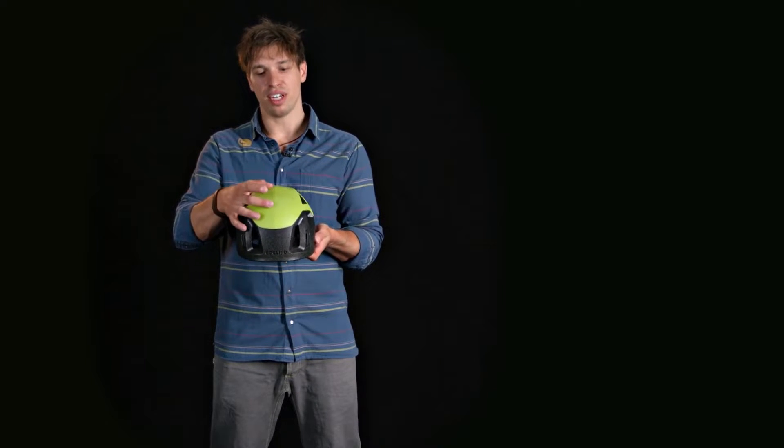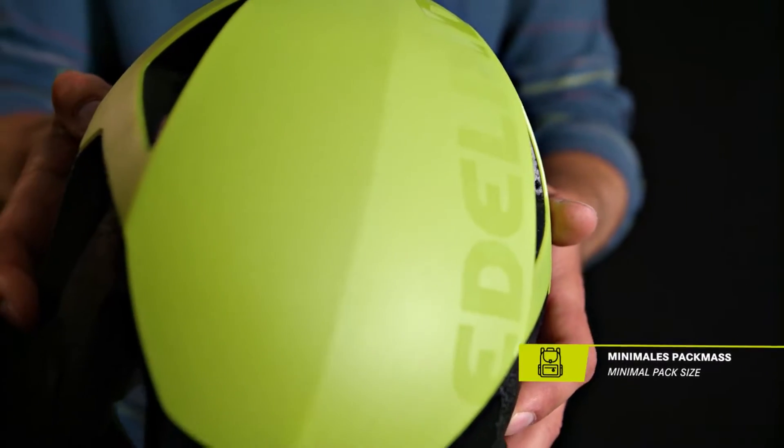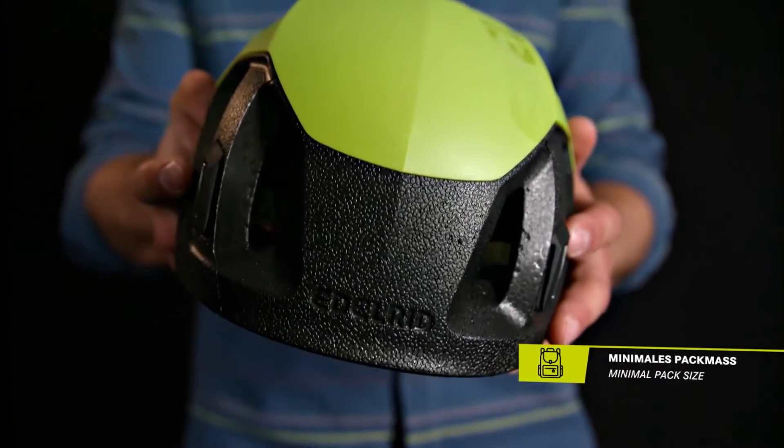It can withstand several impacts without breaking. The ABS hardshell distributes the force of an impact to a larger area, which allows a very slim design of the helmet and thus it rests very close to your head.